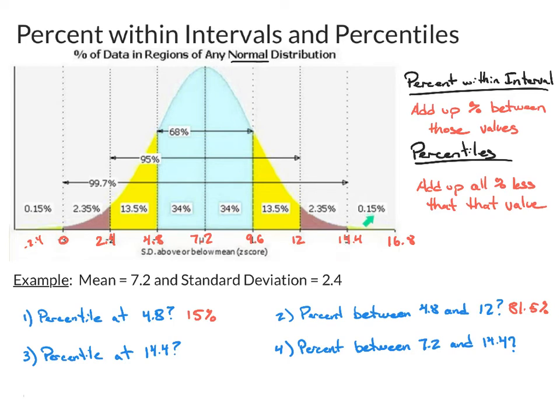Or you could do it a little bit faster and say, well, I only have 1%, which is above, 1% value above. And so all these have to add up to 100, so you just do 100 minus 0.15. So it would be 99.85 percentile. And that's pretty high.